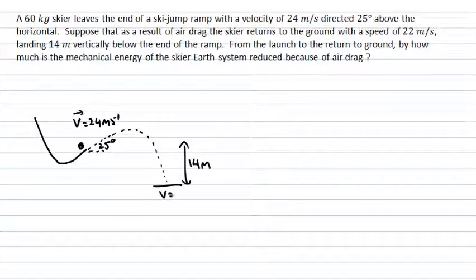We're also told that they hit the ground with a velocity of 22 meters per second. Importantly, during this journey through the air the skier is going to be experiencing drag. What's that going to do to the motion?